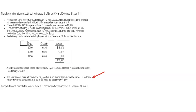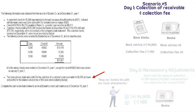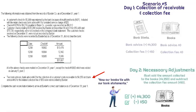Finally, we have a bank advice showing an additional collection, meaning money was collected and is in the account — we need to add that to the books so it ties out. We're also being charged a $50 collection fee per the bank advice, so we need to subtract that $50 from the books. After all these adjustments, the books and the bank statements should all tie out — and they do.